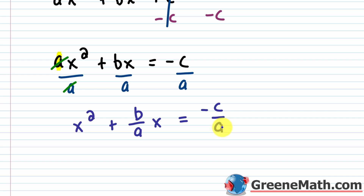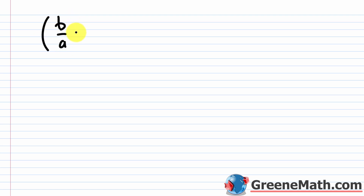Now comes the tricky part — completing the square to create a perfect square trinomial on the left. Take the coefficient of x to the first power, cut it in half, then square it. If you just keep repeating 'cut it in half and square it,' you'll never forget how to complete the square.